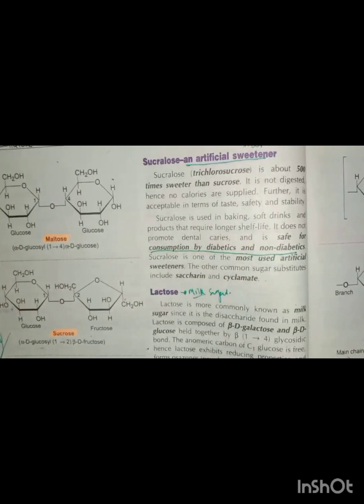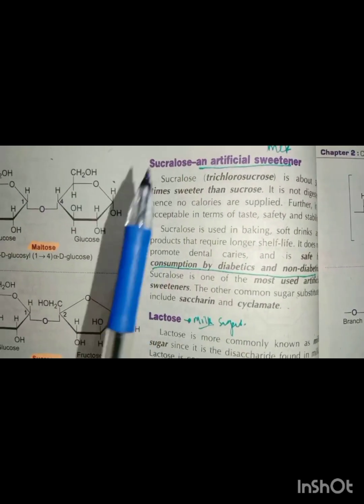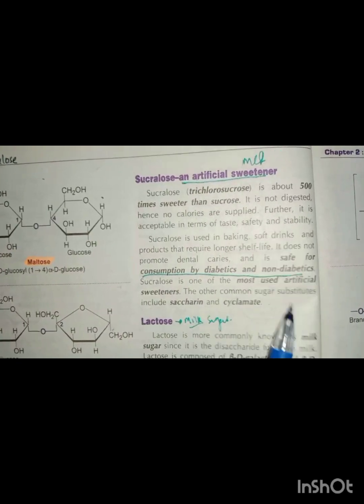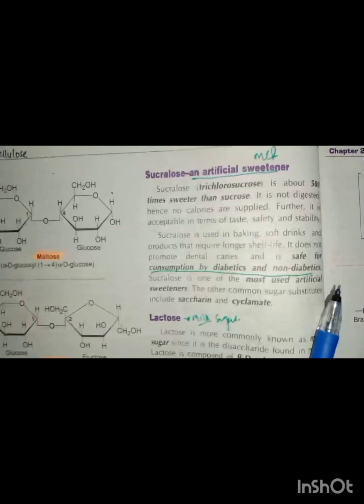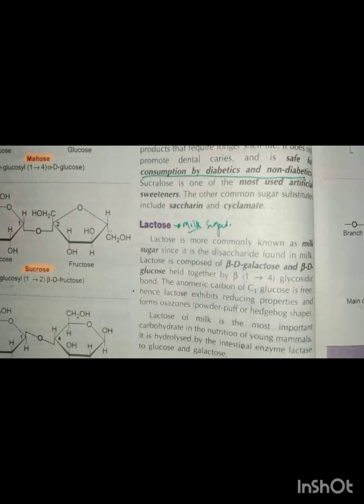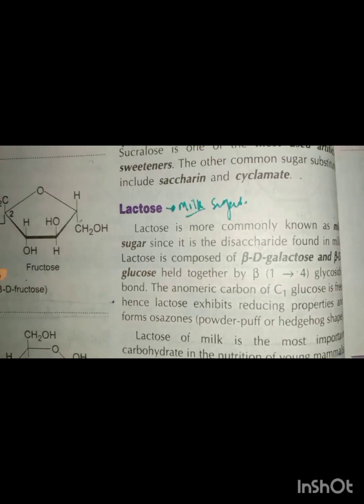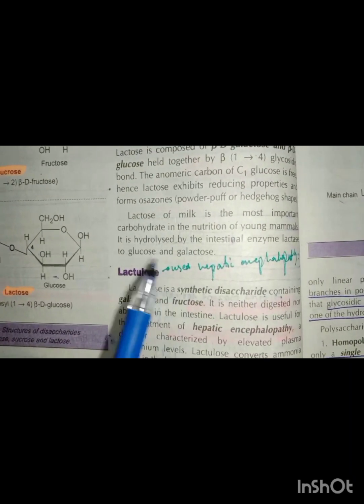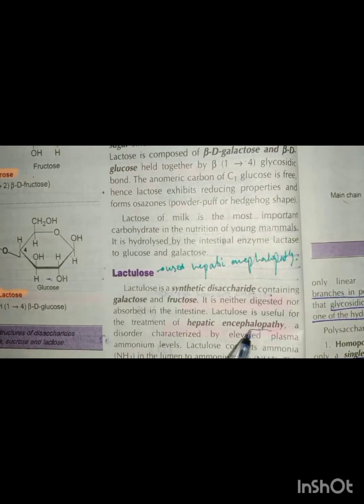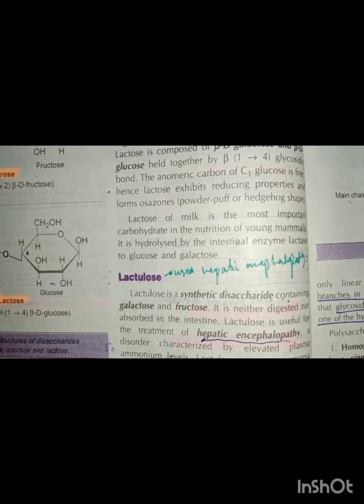Remember this MCQ: sucralose is called an artificial sweetener — it is also called carcinogenic. We all know about lactose as milk sugar. Lactulose is very important and is used in hepatic encephalopathy.